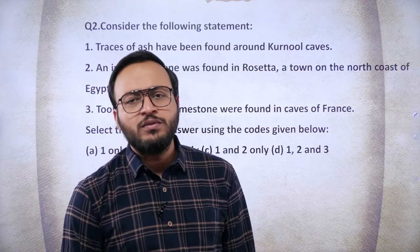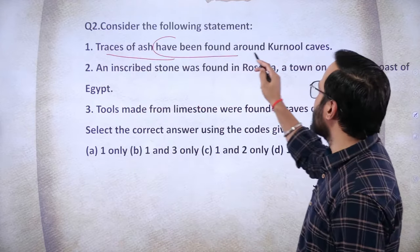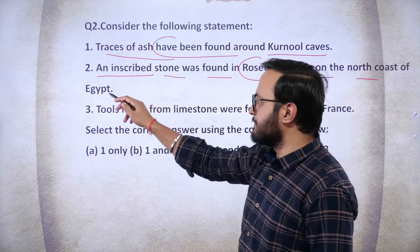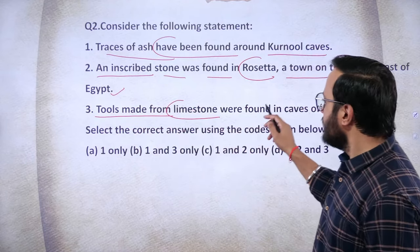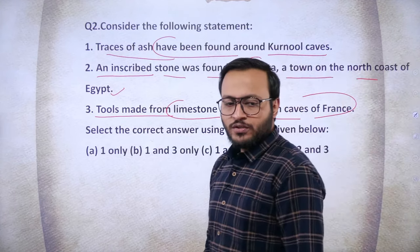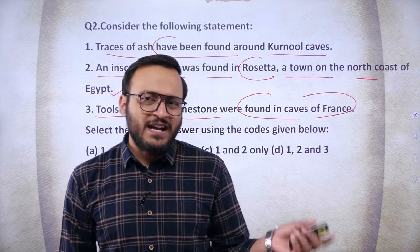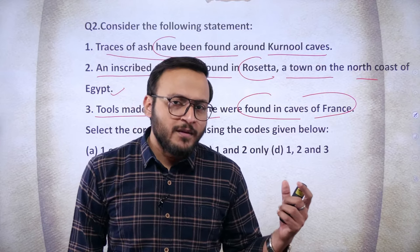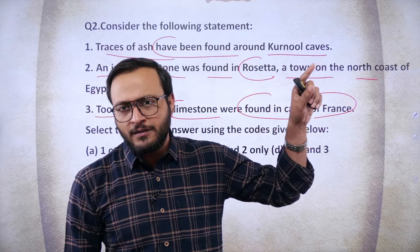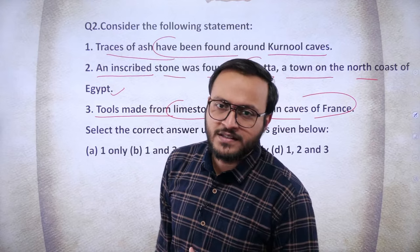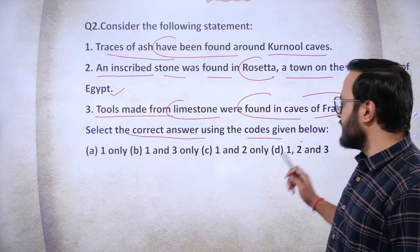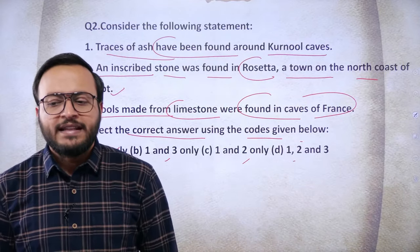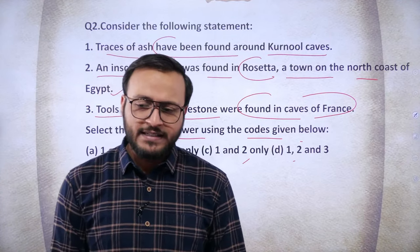Question 2: Consider the following statements — traces of ash have been found around Kurnool caves; an inscribed stone was found in Rosetta, a town on the north coast of Egypt; tools made from limestone were found in the caves of France. These are comparative pointers in the NCERT between prehistoric India and the prehistoric world.